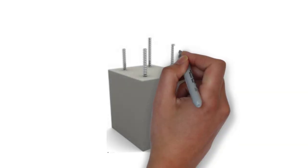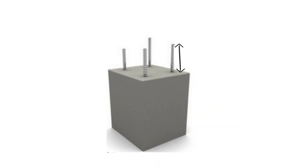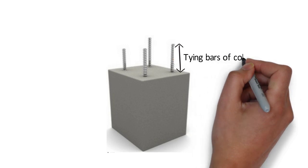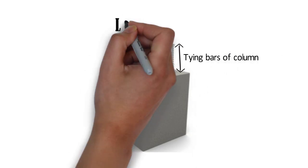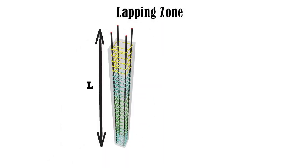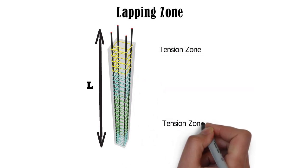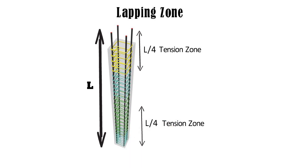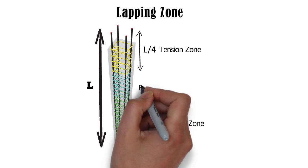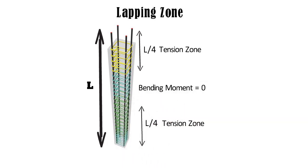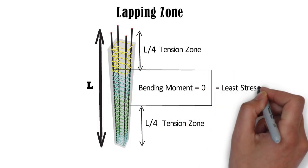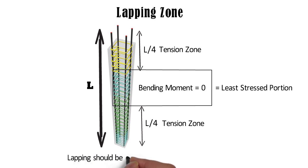In this image you can see some amount of rebar is left for future construction. This extra rebar will be needed for tying bars of the column — this extra length of rebar is also called lap length. For the lapping zone in a column of length L, the tension zone is located at L/4 distance from both ends of the column. Since this zone experiences tension, lapping should not be provided here. The bending moment at the middle portion of the column is zero, meaning it is least stressed, so lapping should be provided in the mid section of the column.